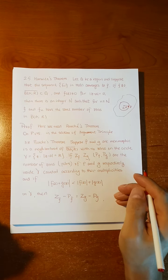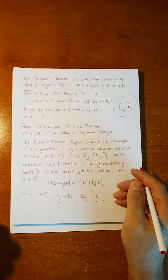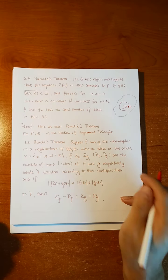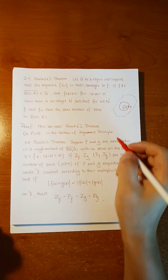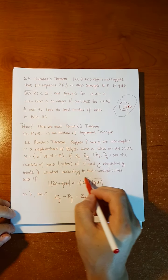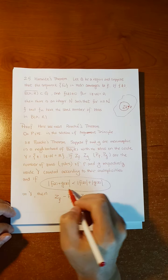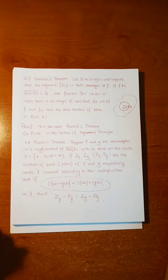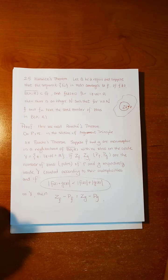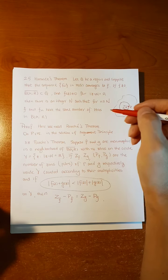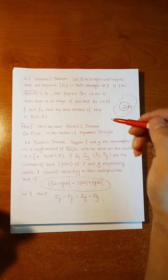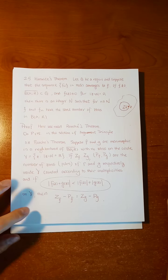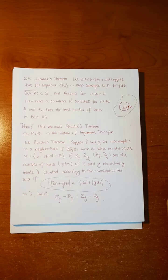So this is Rouché's theorem — you get this from the argument principle. Basically, we are going to verify this condition, which is the crucial condition in the Hurwitz theorem. We are going to get f(z) and f_n(z) to satisfy this condition.